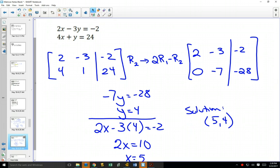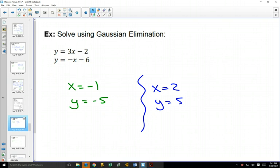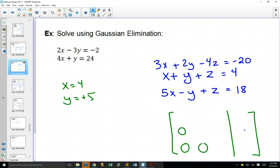There's two for you to try. I'll put the answers up here so you can check. Once you've got both of those, I want you to try this system of three by three. You want to get it to be three zeros down there.